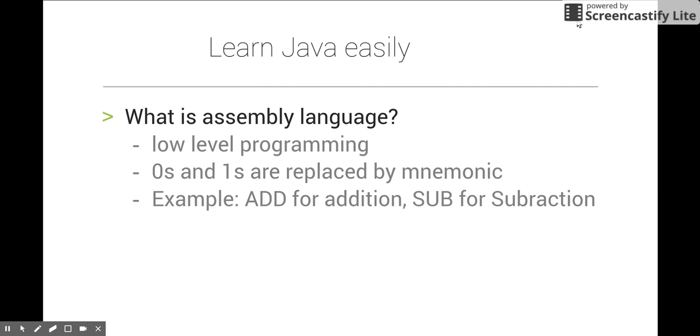In machine level language we use zeros and ones, but in assembly we use a different syntax called mnemonics. For example, to perform an addition operation you give a command using a mnemonic. To add two numbers like 2 and 3, you write ADD 2, 3.